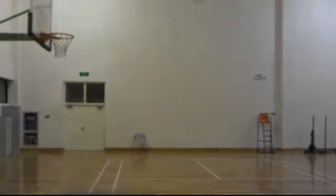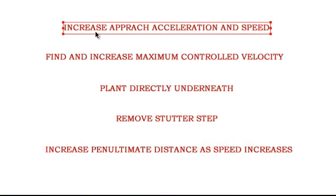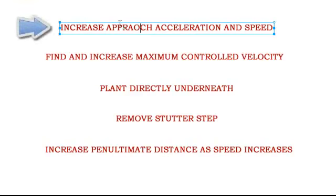Let's just go over a few bullet points of the things that we covered in this particular video. Increase the approach of the acceleration and the top speed. So find that maximum control velocity that you can get your highest velocity possible. The higher velocity, the more you're going to be able to transfer into your vertical leap. So once you find that, try and increase it by trying to increase the speed on every approach.